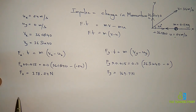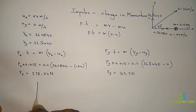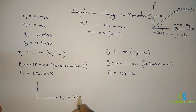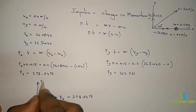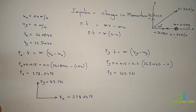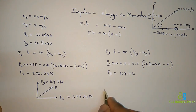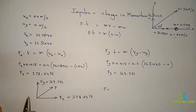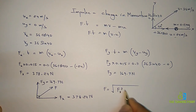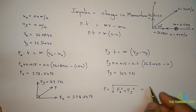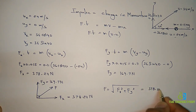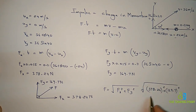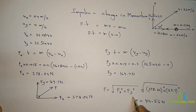We now have Fx = 378.24 newtons and Fy = 169.7 newtons. We need to find the resultant impulsive force. Since the angle between these two components is 90 degrees, we apply the parallelogram law of forces: F = √(Fx² + Fy²) = √(378.24² + 169.7²). Simplifying, the resultant impulsive force is 414.56 newtons.